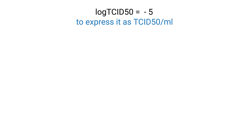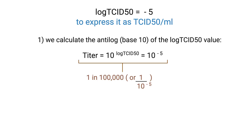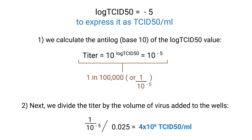However, we want to express this as TCID-50 per milliliter. To achieve this, we follow two steps. First, we calculate the antilog, base 10, of the log TCID-50 value. To express this as the dilution factor where 50% of the wells are infected, we represent it as 1 in 100,000. Next, we need to express this per milliliter. For this, we must adjust based on the volume of virus inoculated into each well. In our case, this volume was 25 microliters, which is 0.025 milliliters. From this, we calculate a TCID-50 per milliliter of 4 times 10 to the 6.